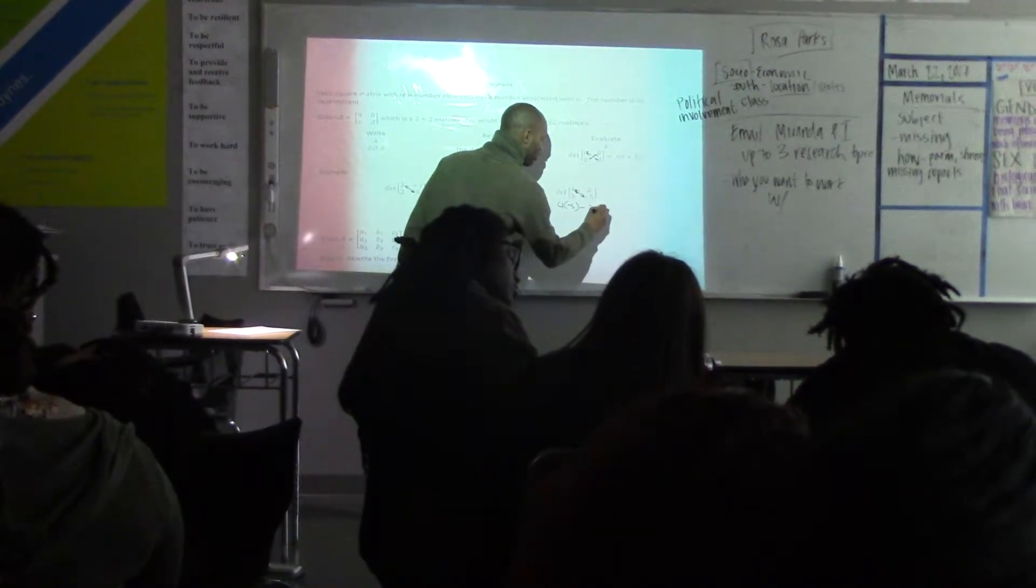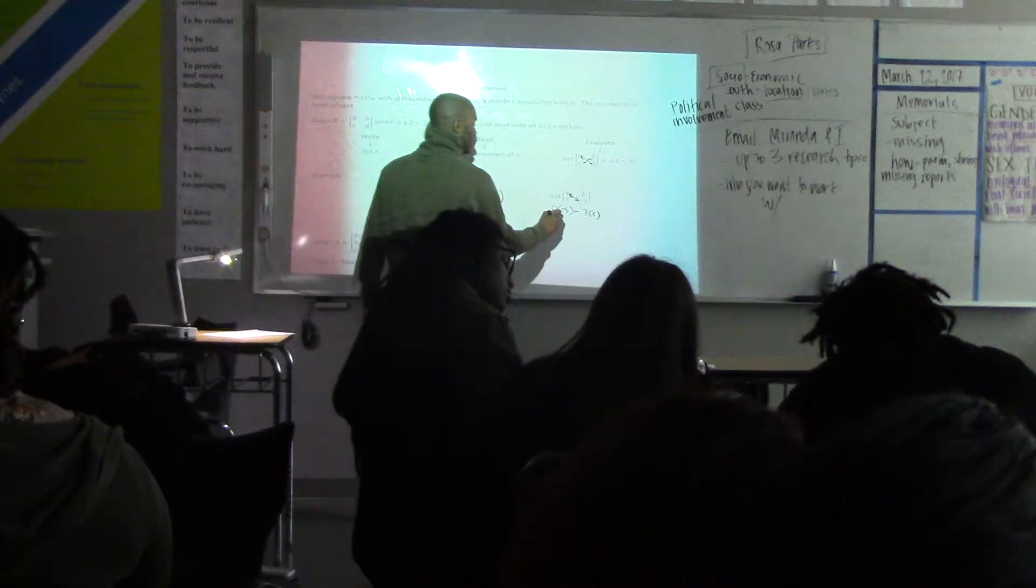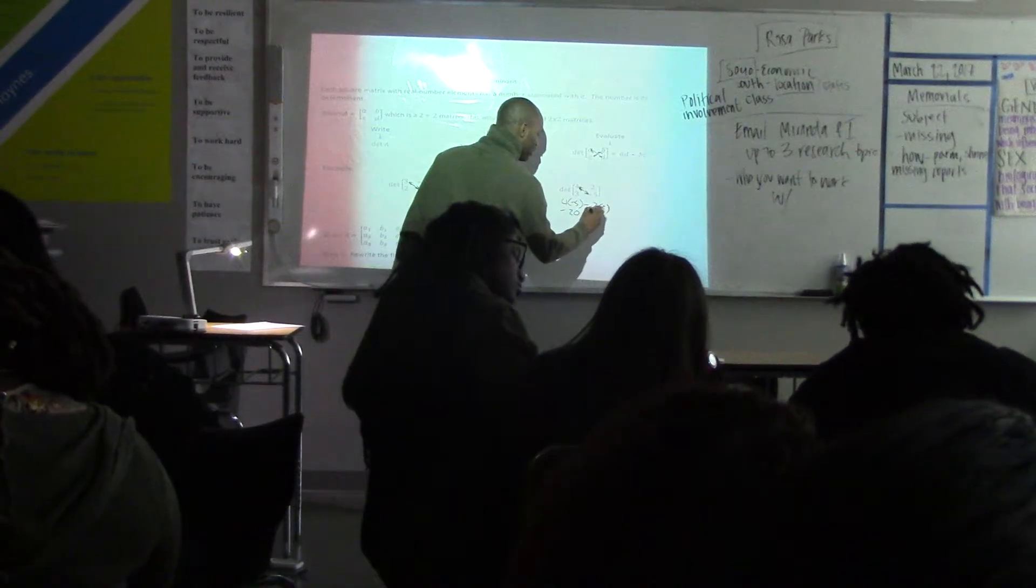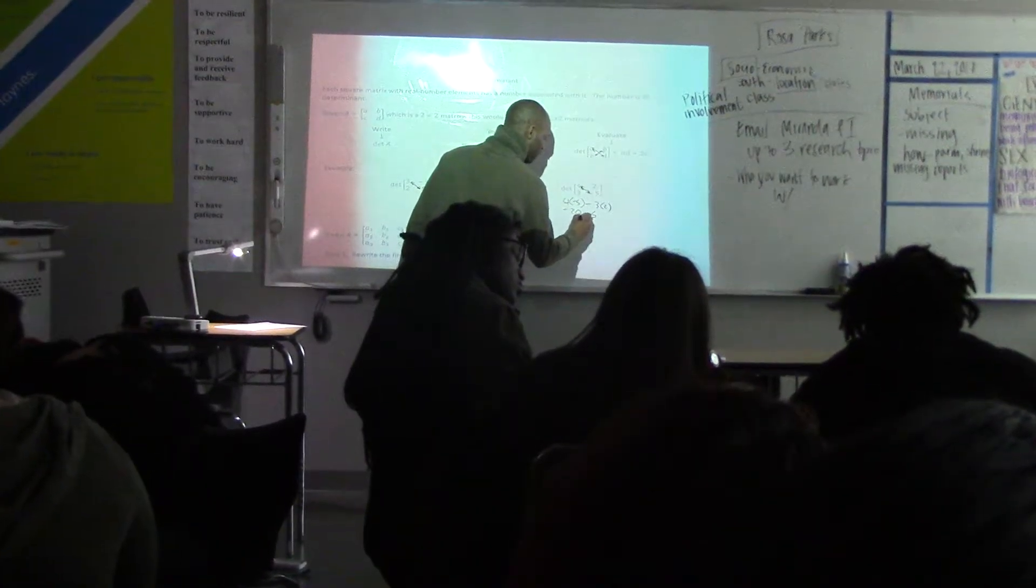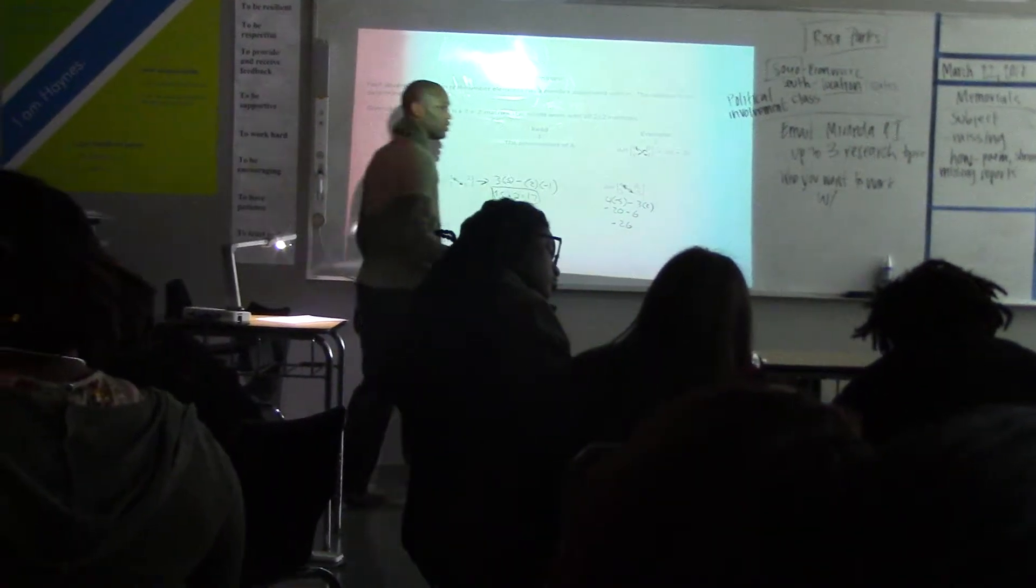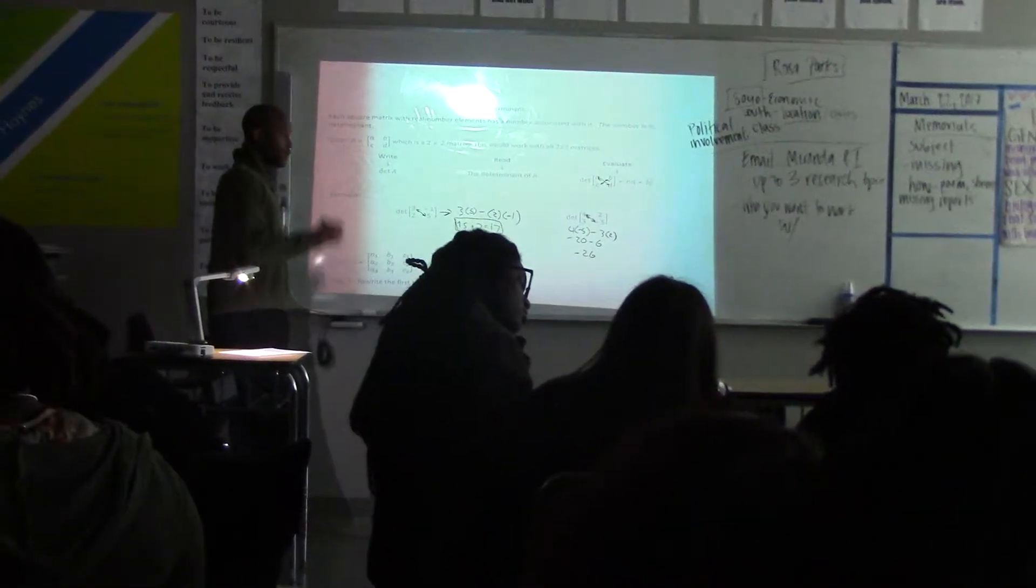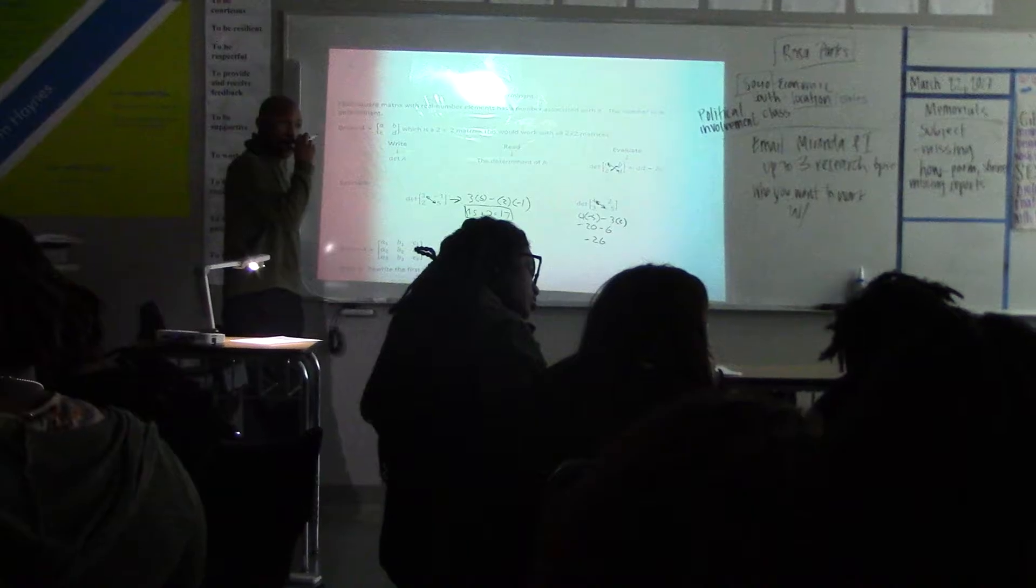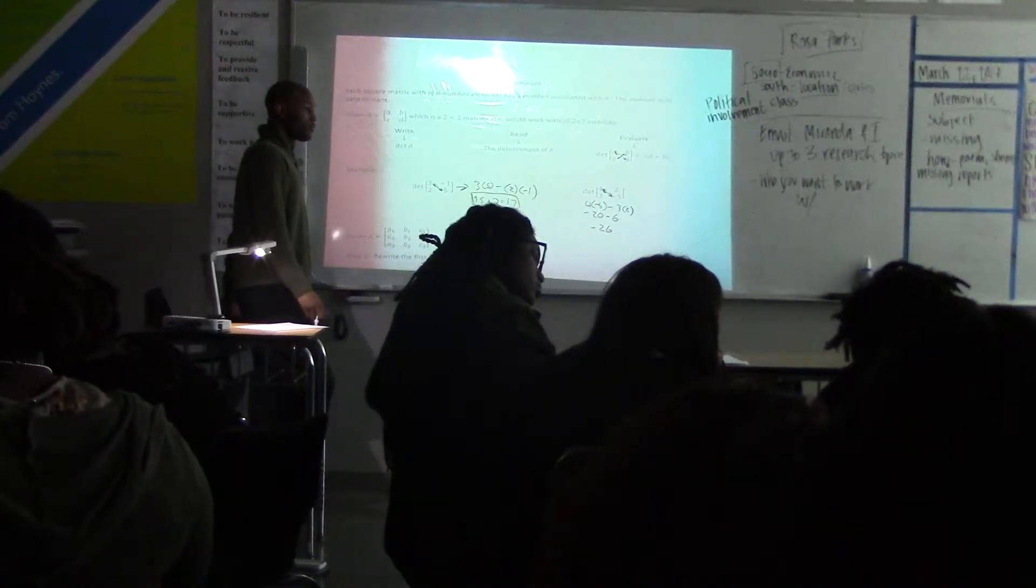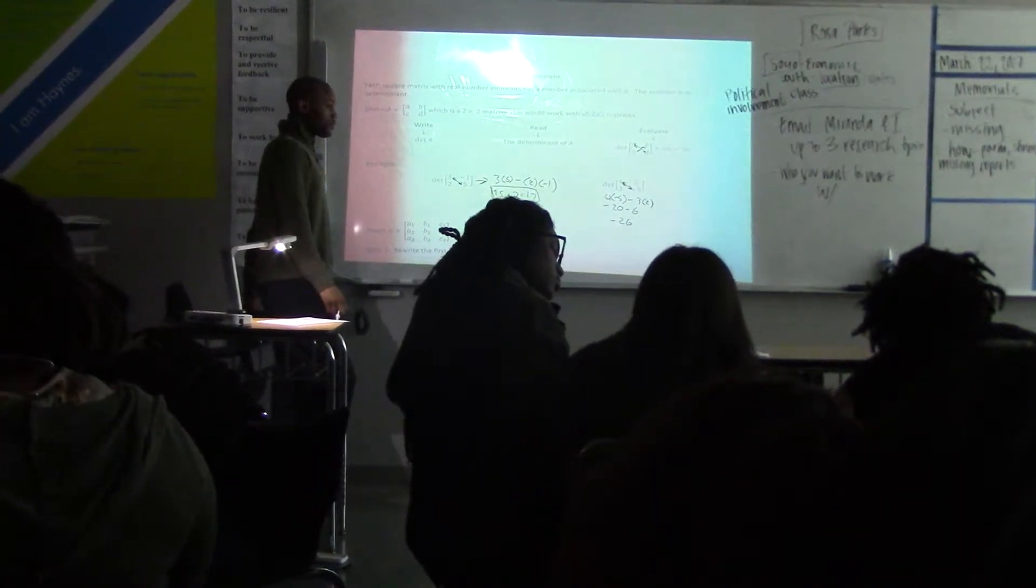So you can take, for a second example, that's on your paper, 4 times negative 5, minus 3 times 2. So that's negative 20, minus 6, which is negative 26.